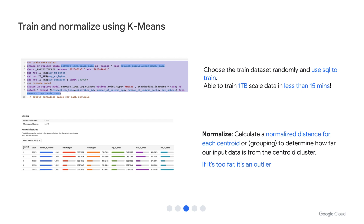Another great feature for an analyst is the scheduled query. I don't want to just create a model one time and leave it — I want it to learn continuously and be updated with the latest patterns. Using a scheduled query and a stored procedure, I can rerun this query in a timely manner, thereby keeping my model updated. Additionally, once the model is created, we will calculate the normalized distance for each centroid or grouping to determine if the input received is too far from the cluster, thereby deeming it as an outlier.